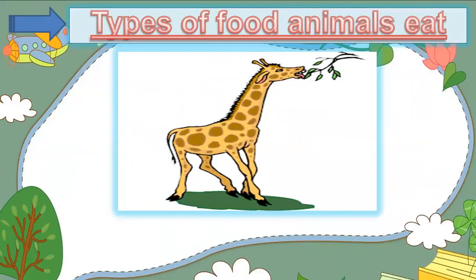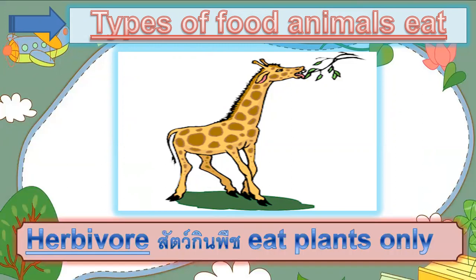Next, types of food animals eat. Look at the picture — it is a giraffe eating leaves. Herbivores eat plants only. We have giraffe, cow, horse, goat, sheep, and elephant. Those animals are herbivores.